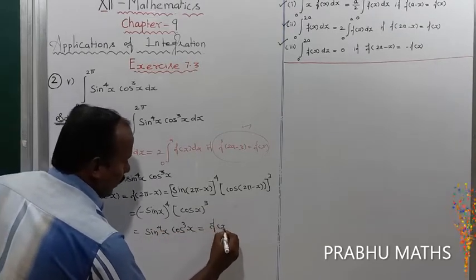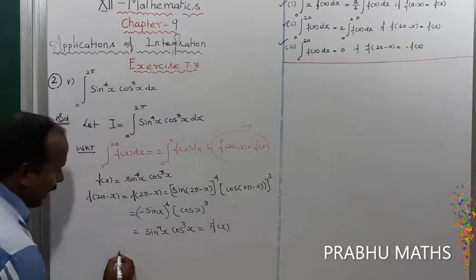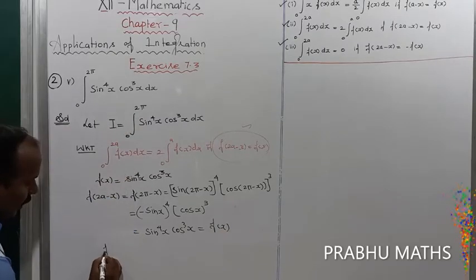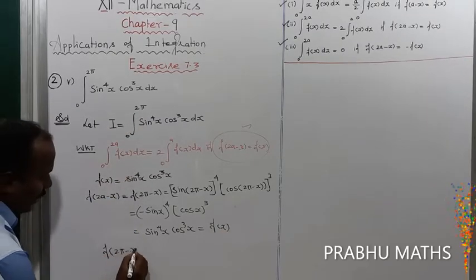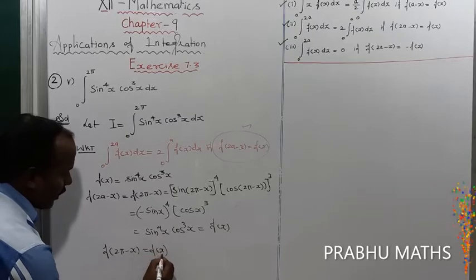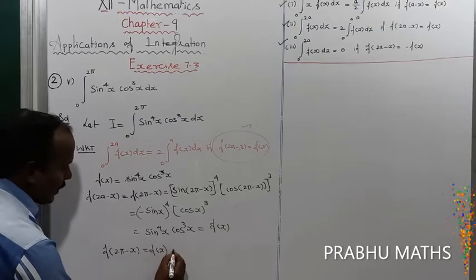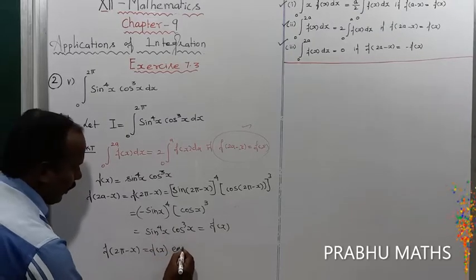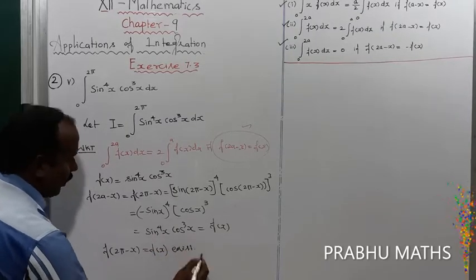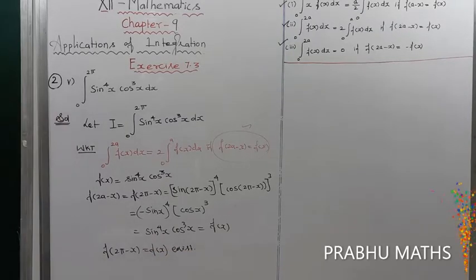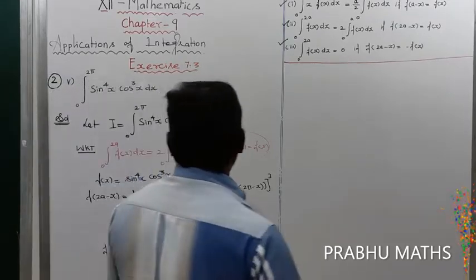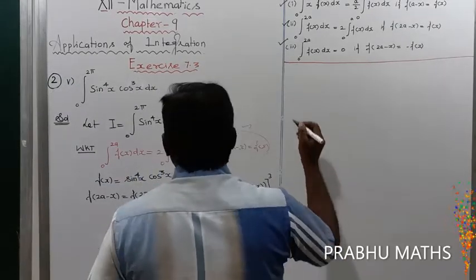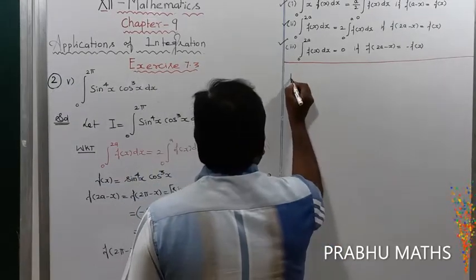This equals f(x), so the condition f(2π - x) = f(x) is satisfied. Therefore the formula exists and the integral reduces to 2 times the integral from 0 to a.